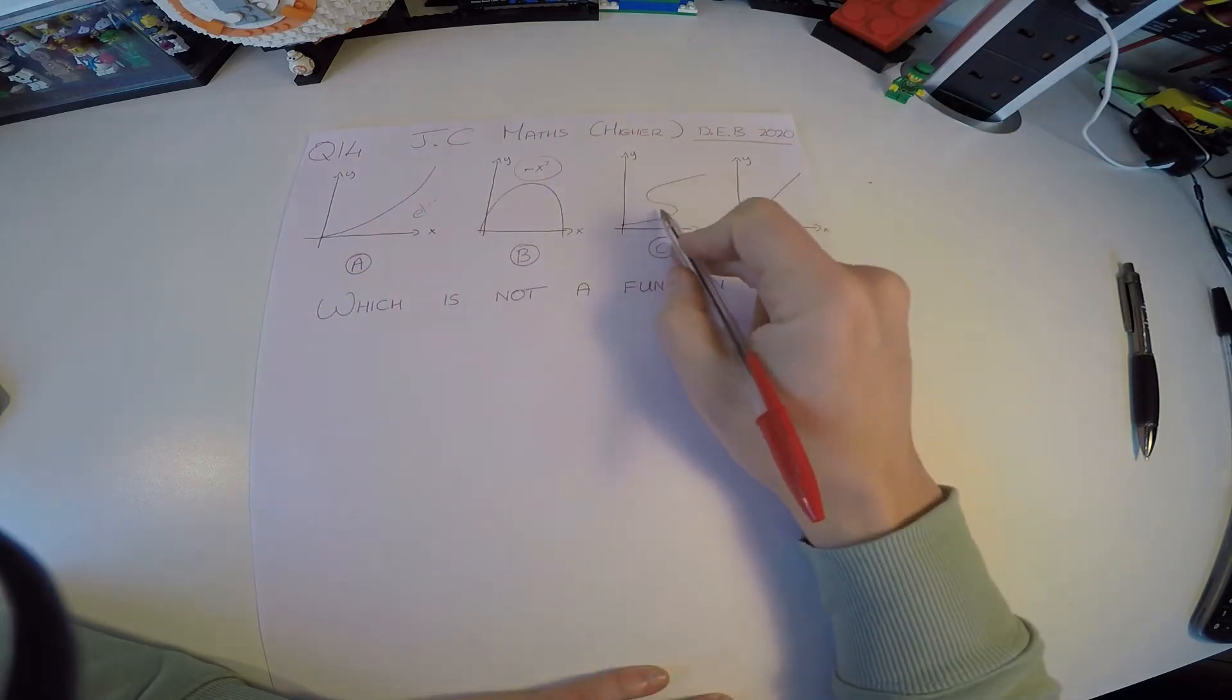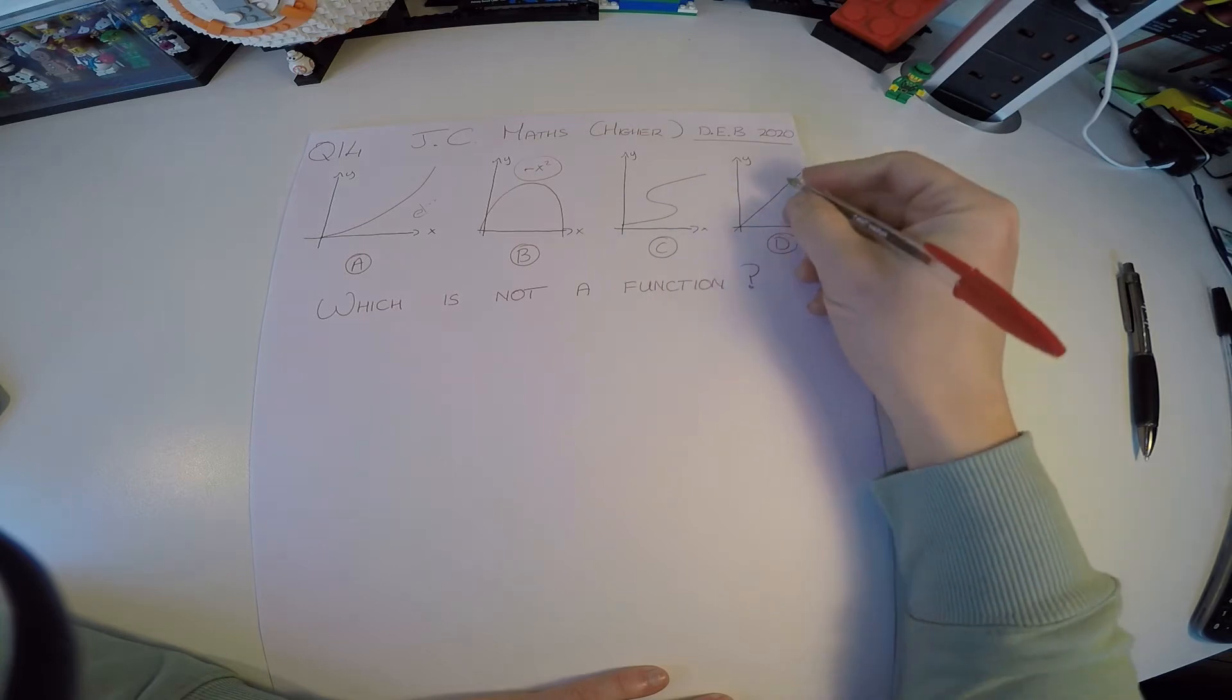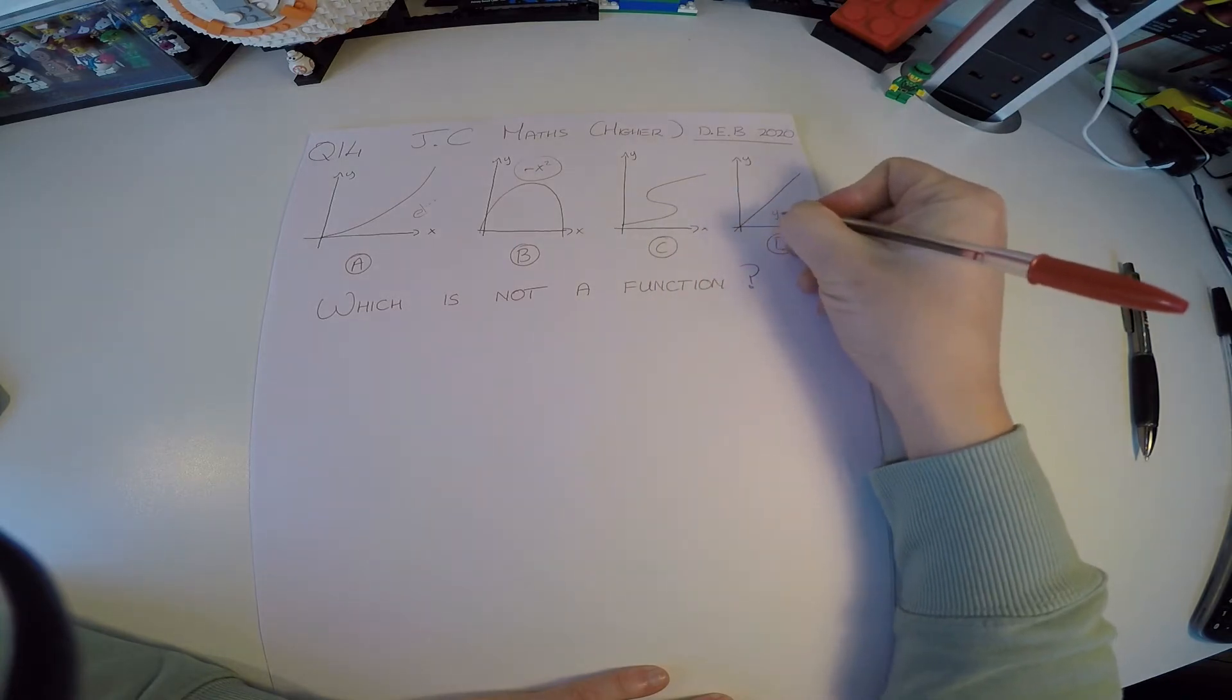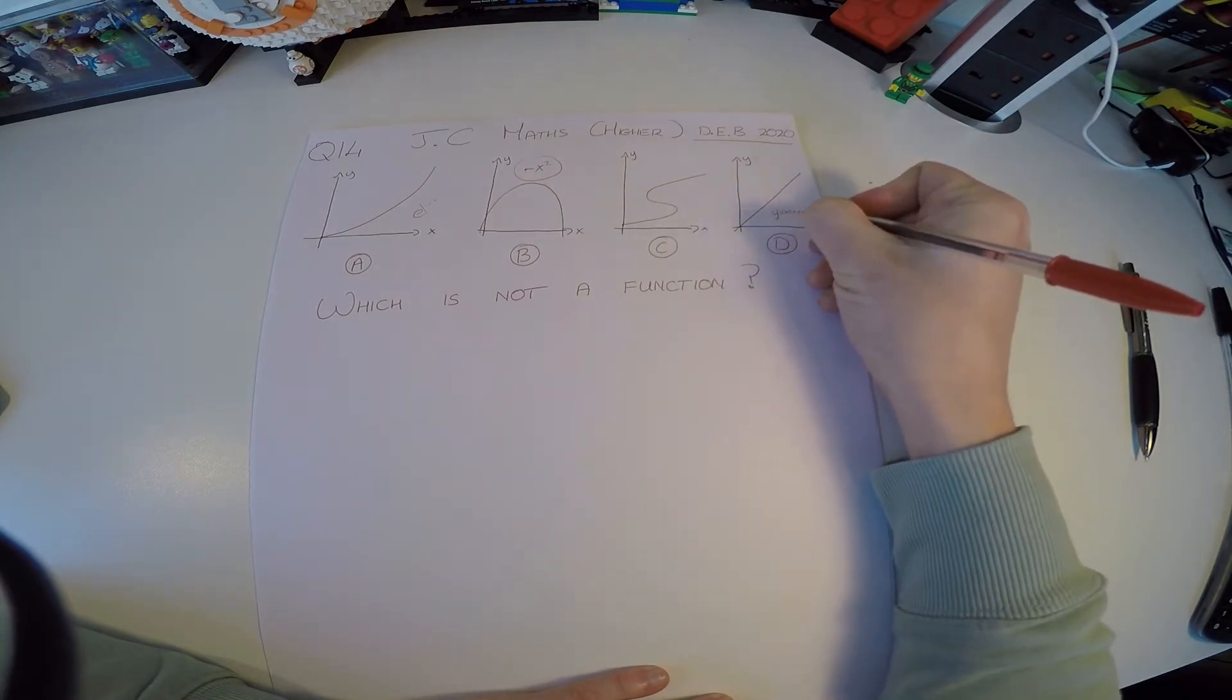But this one looks fishy. We've never seen something like that before. This is just a straight line graph like some y equals mx plus c job.